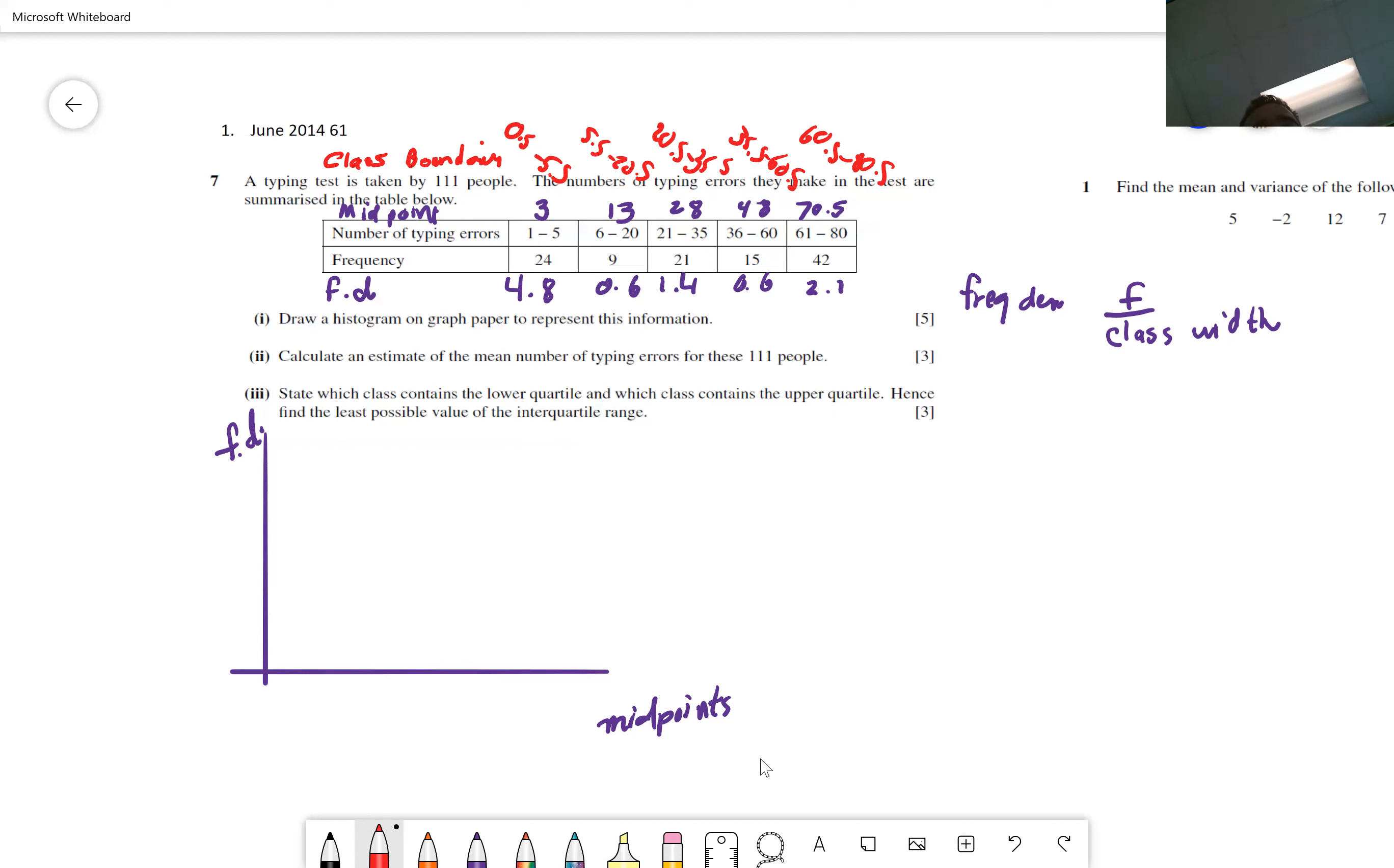Or you could do class boundaries. I think this is the one they would prefer. What you would do is instead of 1 through 5, you would say 0.5 to 5.5. You look at the gap between 5 and 6, and you say that's 1. So you break it in half, and you say I'm going to just make 5 go up to 5.5, and I'll make 6 go down to 5.5. If I add 0.5 to 5, I must subtract 0.5 from 1 so that the width stays the same.